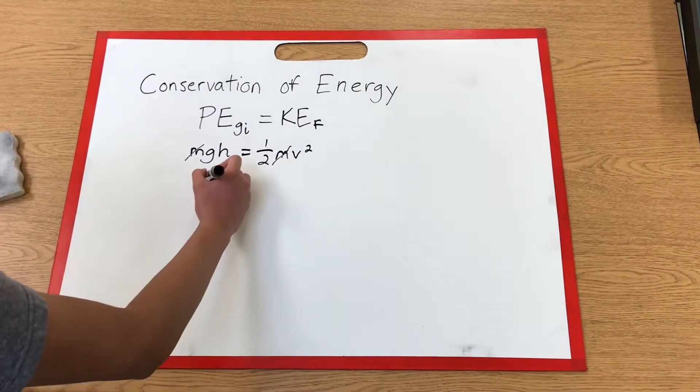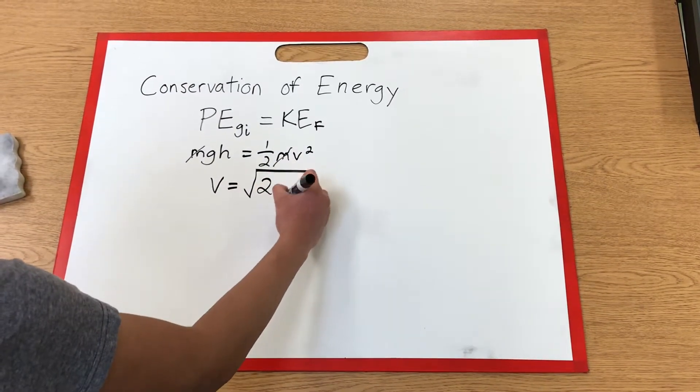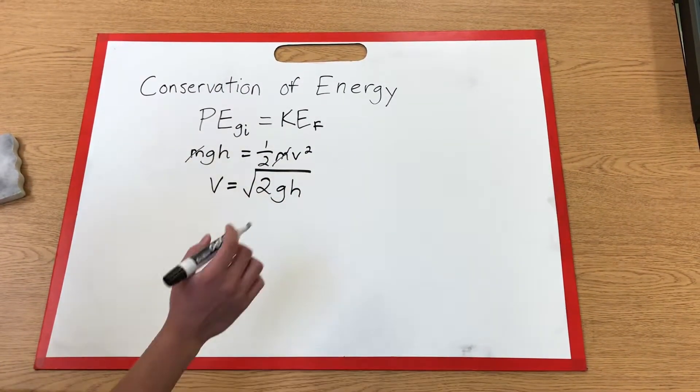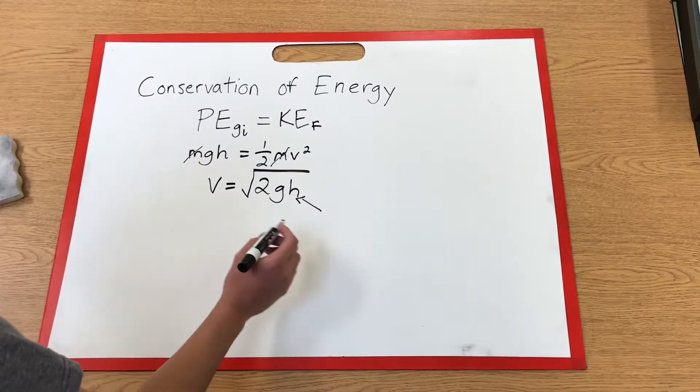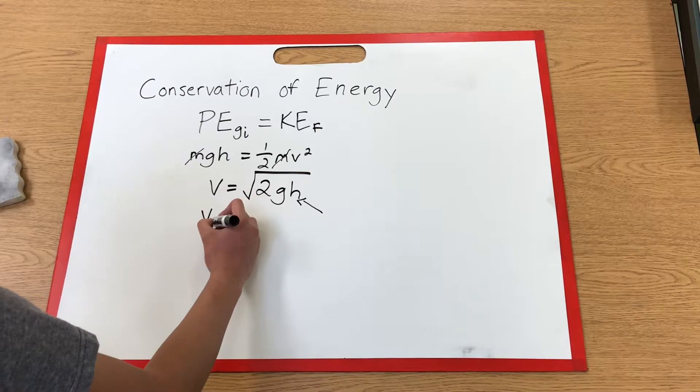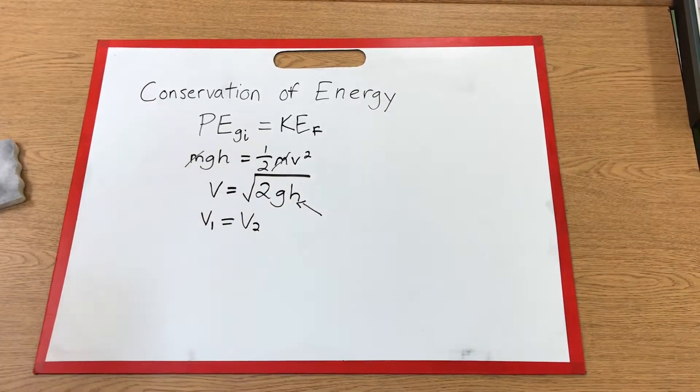Rearranging for velocity, we find that v equals the square root of 2gh. Since both balls start at the same height and end at the same height, the velocity of the first ball and the velocity of the second ball will be the same at the end.